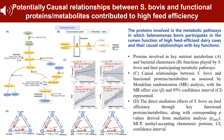Additionally, Selenomonas bovis and Prevotella bryantii contributed to amino acid metabolism through specific enzymes. Selenomonas bovis played a key role in carbohydrate metabolism, contributing to starch degradation, glycolysis, and propionate formation. Bidirectional Mendelian randomization revealed a significant correlation between Selenomonas bovis and MCP for feed efficiency.